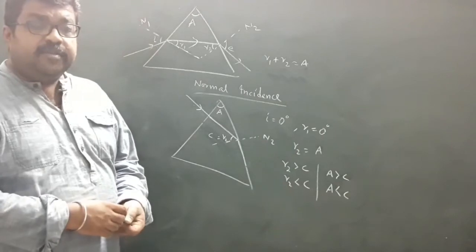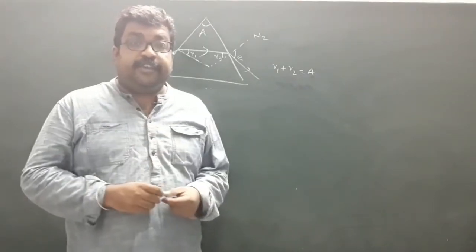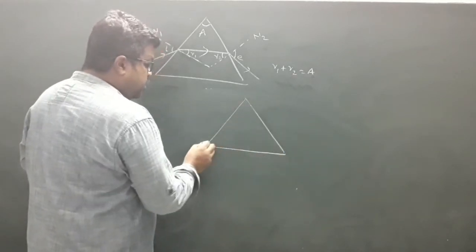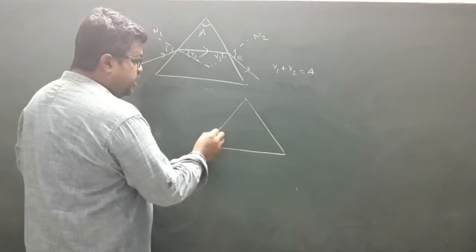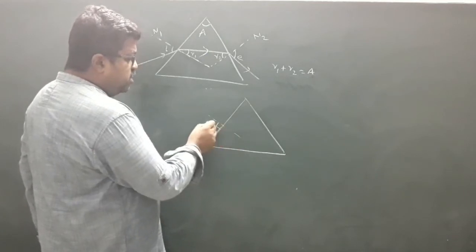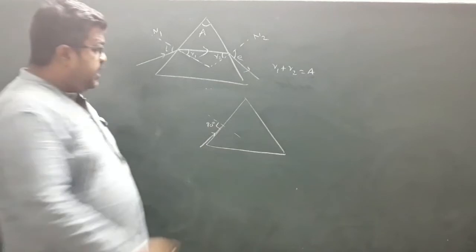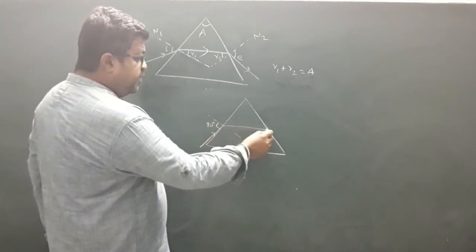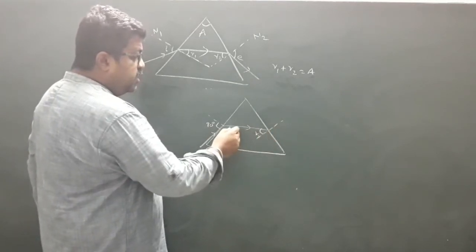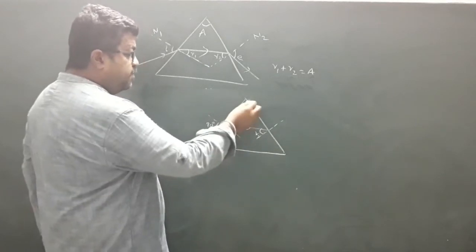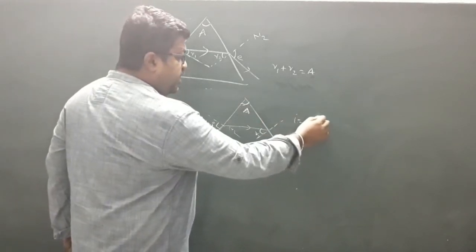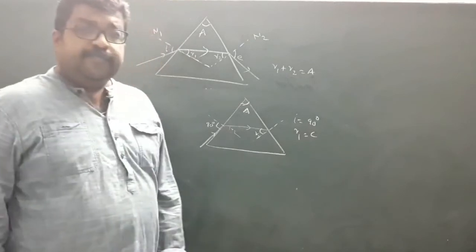Next, let us consider grazing incidence. Grazing incidence means the incident ray grazes the first refracting surface, so this angle is almost 90 degrees. The ray is then refracted and incident at the second refracting surface. Here, r2 is the angle at the second surface, r1 is at the first, and this is the angle of prism. When i equals 90 degrees, that means r1 is equal to C, the critical angle.